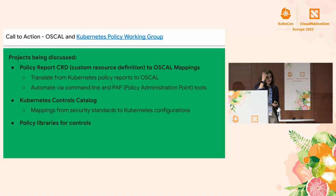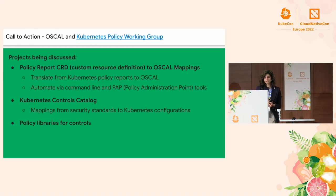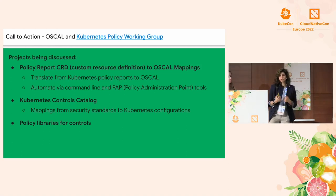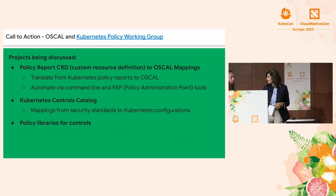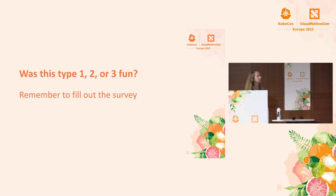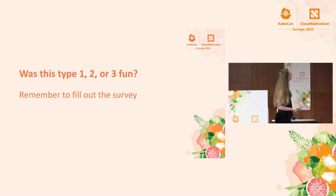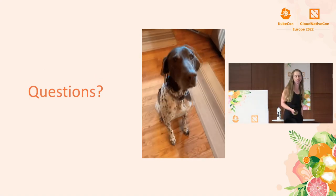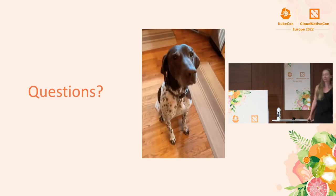The call to action: if you're interested in contributing to OSCAL or building a control library, there is a Kubernetes policy working group that has started mapping out technical controls from NIST 853. That library can guide your closed loop of preventative and detective controls. There are a number of efforts at Google to drive the adoption of OSCAL. There's a survey where you can tell us if you thought this was type one, two, or three fun. We have time for questions.